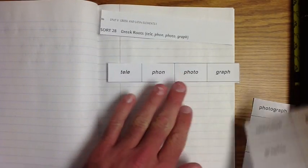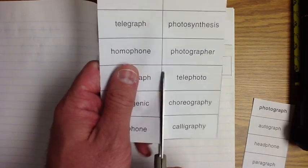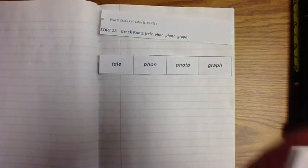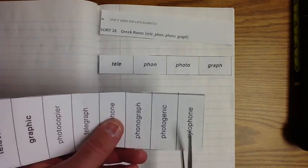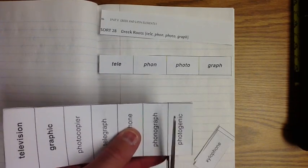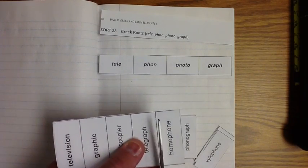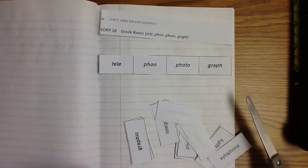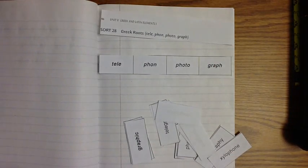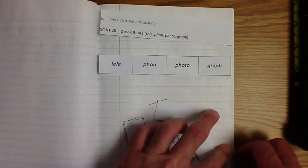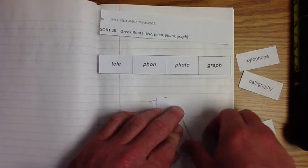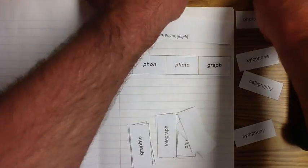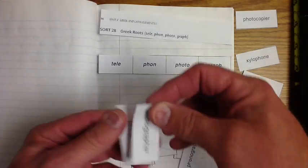Remember, you cut these out just like that, so we can put them across the page, so you can write above it. The great thing about doing spelling the way we're doing it is you get to understand what the words mean and how they go together, and that will help you be a better reader, because when you see these roots anywhere, you'll kind of figure out what words mean.